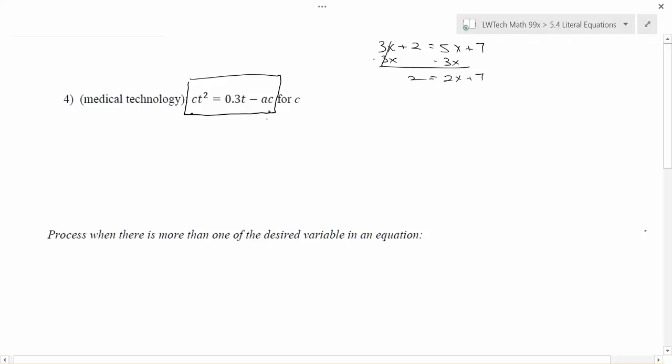However, we still need to do something to go from having two Cs to just a single C that we can then isolate in order to solve our equation. We do have a process where we can do this, and it actually works any time that you have more than one of the variable that you're trying to solve for. The first thing that you want to do is go ahead and get those terms with your desired variable on the same side.